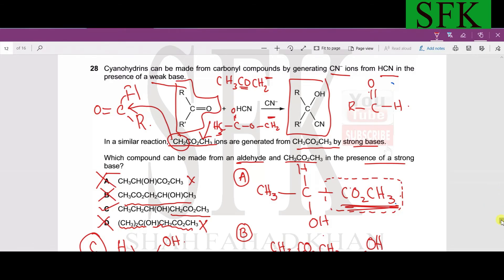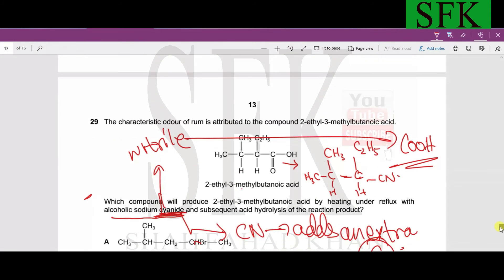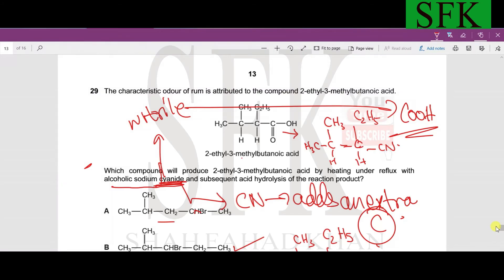Moving on to 29. The characteristic odor of rum is attributed to the compound 2-ethyl-3-methylbutanoic acid. Which compound will produce 2-ethyl-3-methylbutanoic acid by heating under reflux with alcoholic sodium cyanide and subsequent acid hydrolysis of the reaction product? Basically, in this reaction, we could just trace this molecule back into its original molecule.